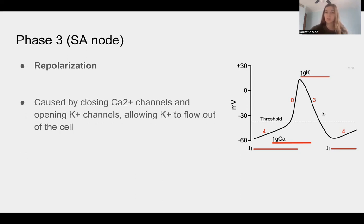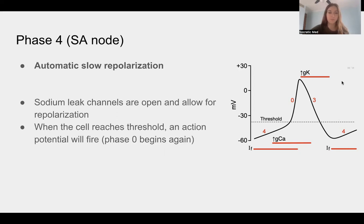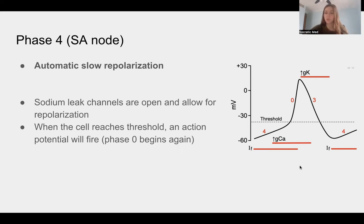Then we move to phase three of the SA node: calcium channels close and potassium channels open, allowing potassium to flow out of the cell, causing repolarization. Phase four is the automatic slow depolarization — our unstable resting potential — where sodium leak channels allow sodium to slowly leak into the cell, gradually moving toward threshold. Once threshold is reached, the action potential fires again, we start over at phase zero, and this rhythmic contraction continues.